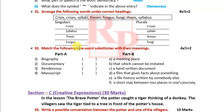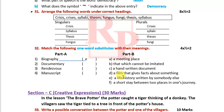Next, one-word substitutes: 'biography' — a life history written by somebody else. 'Rendezvous' — a meeting place. 'Manuscript' — a handwritten document. 'Documentary' — a film that gives facts about something. Answer: D — documentary.